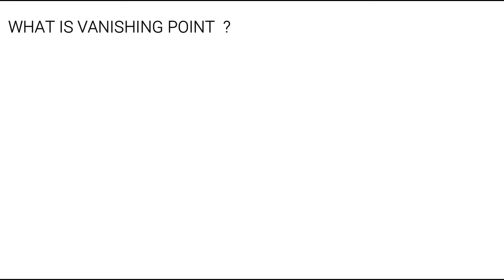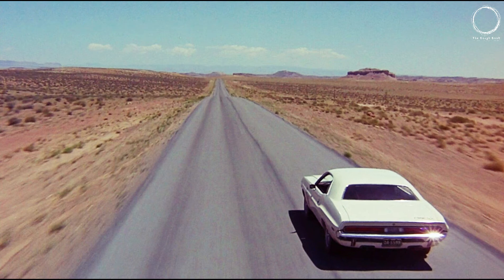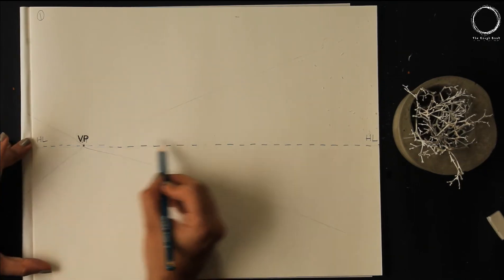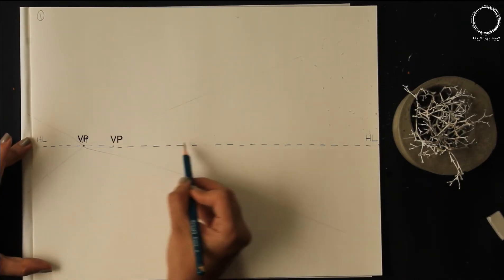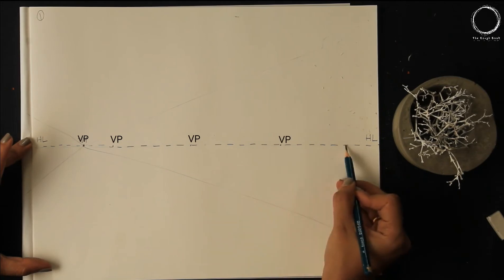So what is a vanishing point? A vanishing point means this is the last point you can see with your naked eyes, and everything else vanishes after that point. Likewise, the vanishing point can be anywhere on the horizontal line.